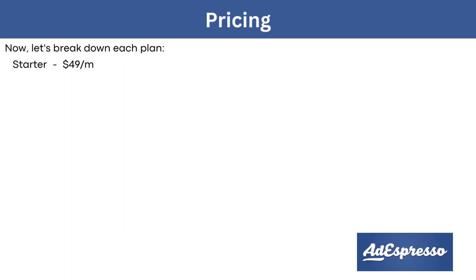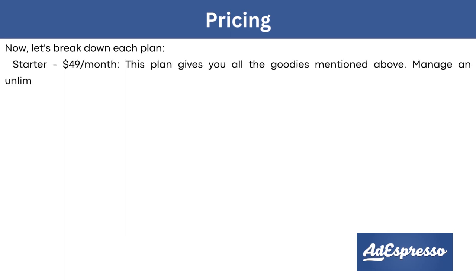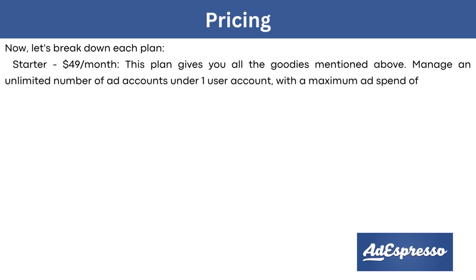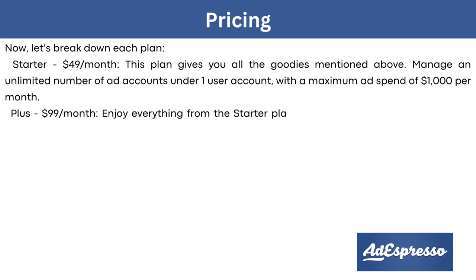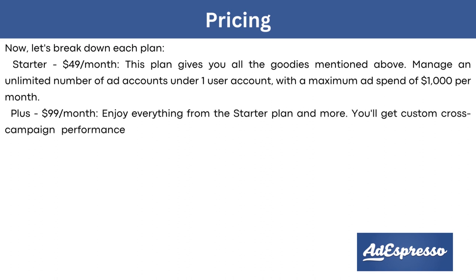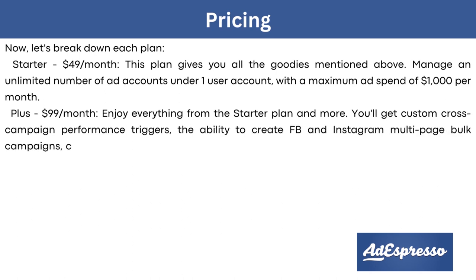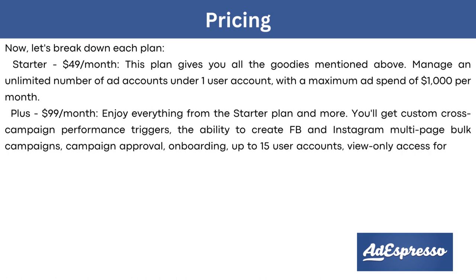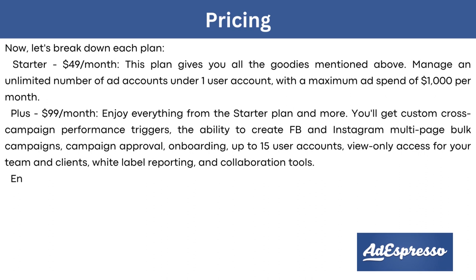The Starter plan at $49 per month gives you all the features mentioned, allowing you to manage an unlimited number of ad campaigns under one user account with a maximum ad spend of $1,000 per month. The Plus package at $99 per month includes everything from the Starter plan plus custom cross-campaign performance triggers, Facebook and Instagram multi-page bulk campaigns, campaign approval, onboarding, up to 15 user accounts, view-only access, white-label reporting, and collaboration tools.